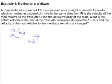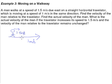Find the velocity of the man relative to the travelator. What it means is: if you are the travelator, how would you see the man moving? If you are on the travelator and you are not moving yourself — just moving with the travelator — you will see the man walking past you at a speed of 1.5, isn't it?